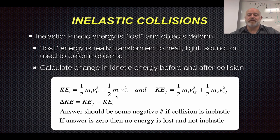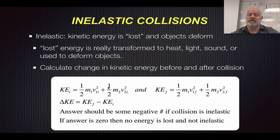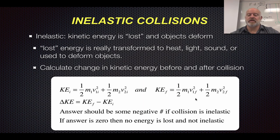We assume that mass doesn't change, so the velocities are the things that change. This is nice because if one object is stationary — say object one is a car and object two is a brick wall — object two has zero velocity, so that part of the equation goes to zero. Even though these equations can get really big, we look for those places and insert zeros to simplify. Our change in kinetic energy is final minus initial, so it can be all of one set of terms minus the other.